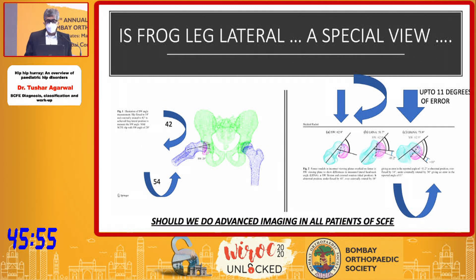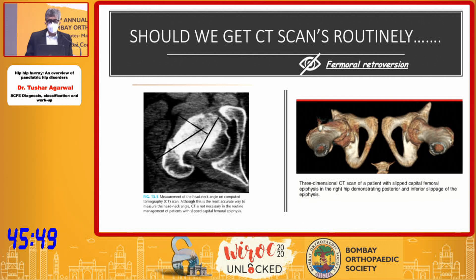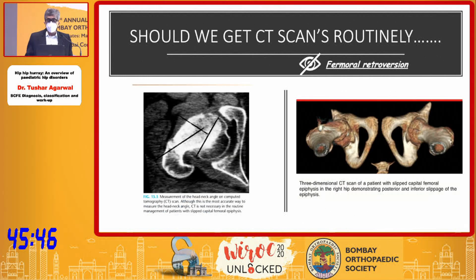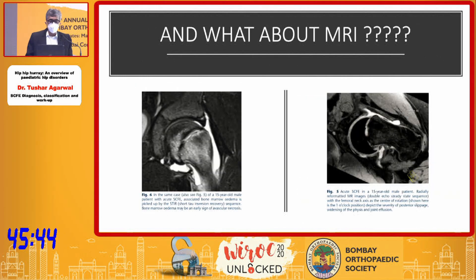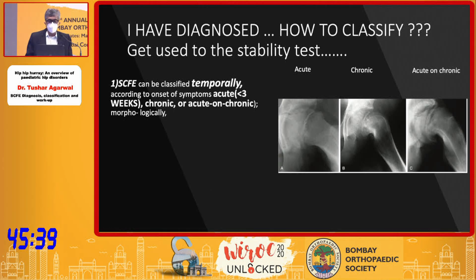Having an ideal frog-leg view is very important, though it may be difficult in painful patients. CT scan is the most ideal way of diagnosing the head-neck angle and also identifying relative femoral retroversion which may be hidden. MRI tells us about early diagnosis, AVN status, and also about the degree of displacement.